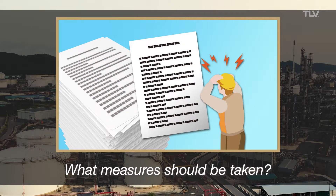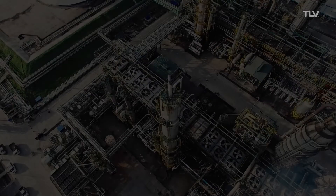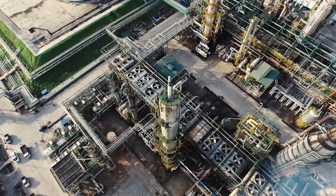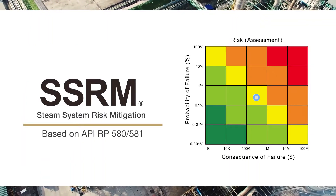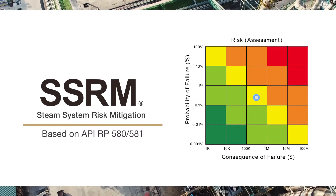With limited resources, it is not feasible to pursue all possible mitigation actions. Is it realistic to want to implement effective measures in only the areas that need it most? TLV developed STEAM System Risk Mitigation, SSRM, to implement effective mitigation actions in the areas where it is most needed.